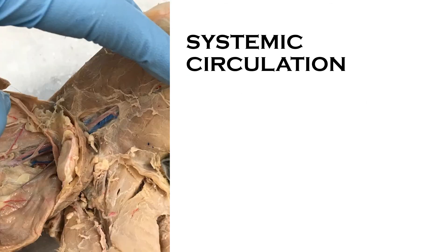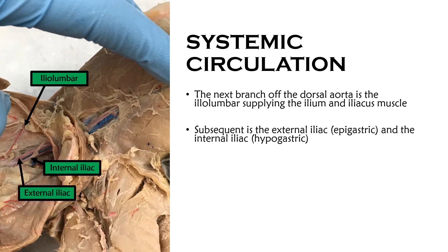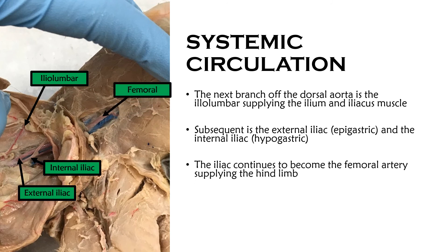Now in the lower half of the body, the next branch is the iliolumbar, supplying the ilium and the iliacus muscle. Subsequent to that is the external iliac — also sometimes known as the epigastric — and the internal iliac, sometimes known as the hypogastric. The iliacs continue to become the femoral artery, supplying the hind limb.